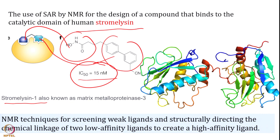Stromelysin-1 is a metallo-MMP — matrix metalloprotease — which has implications in cancer. One can find a protein with two different binding sites, identify the two ligands separately by SAR through chemical shift perturbation, and then join them by chemical bonds to find a more potent molecule with essentially nanomolar potency. This exposition of a simple titration experiment for screening weak ligands and structurally directing these ligands by chemical linkage to have a more potent compound is how one can approach the drug development stage.